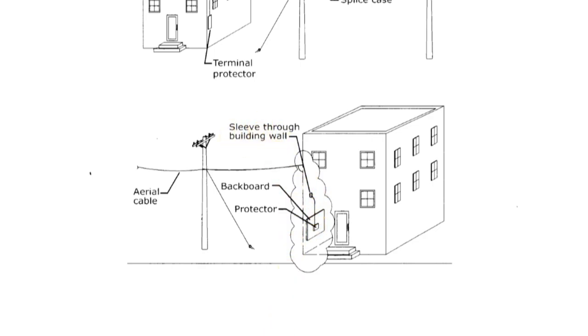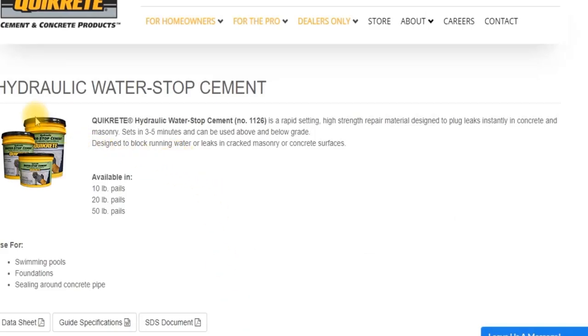Now with that conduit sleeve, you're going to want to get some hydraulic concrete. You're going to want to seal the outside of it. Hydraulic concrete, you can go online, I'll put a link on the bottom too. It'll seal the outside so no water gets through.